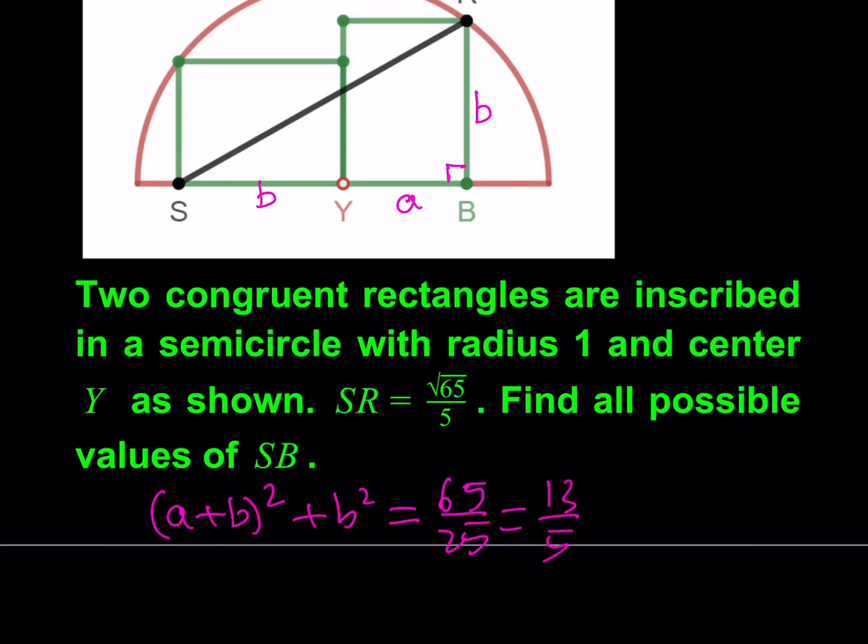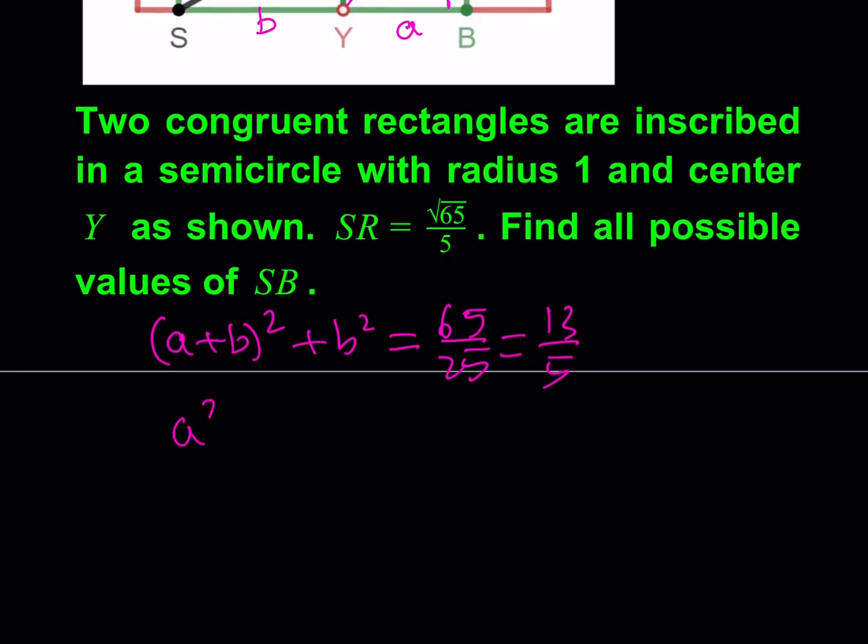And then I do have another relationship which comes from this triangle here, because that's the radius of the semicircle. So I'll be getting a² + b² = 1.